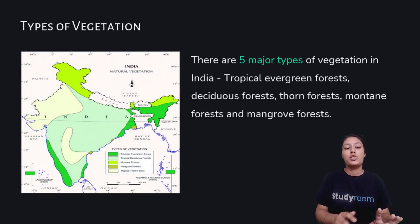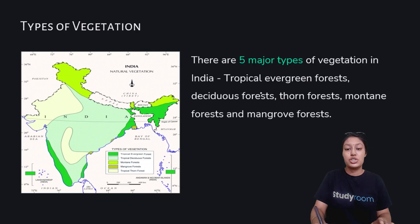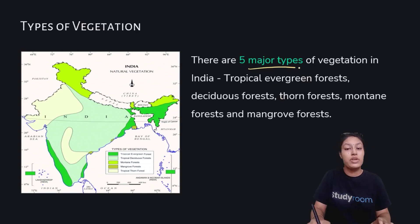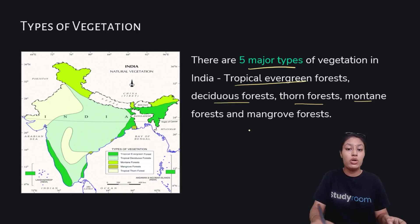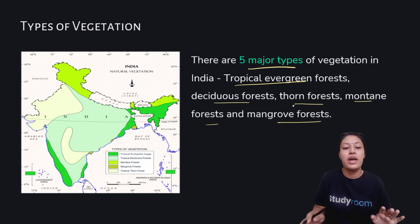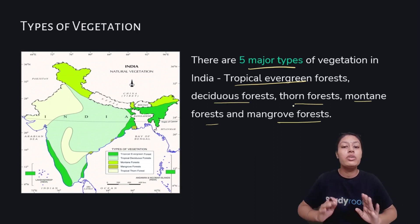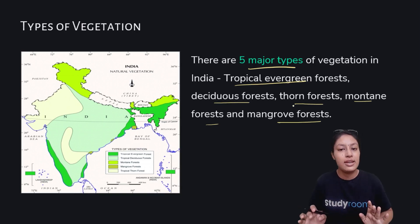So the very first thing is the important types of vegetation. There are five major types: first, tropical evergreen forest; deciduous forest; thorn forest; mountain forest; and mangrove forest. These are the five types we will be studying in the coming slides.